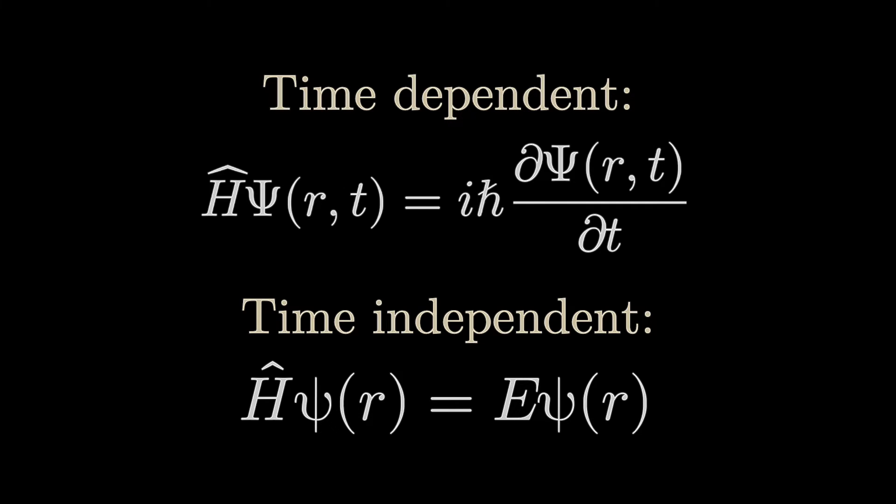Again, to remark an important fact, this entity H-hat is not a number or a function. It's an operator. An operator will turn one function into another one, because it operates on it. Why would we use a Hamiltonian operator in quantum mechanics, other than to write the Schrödinger equation more compactly?